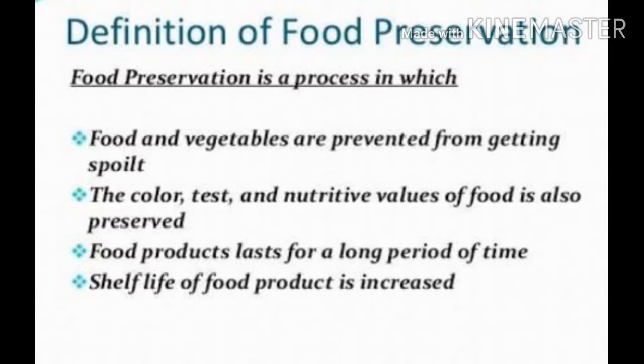Let us discuss what is meant by food preservation. Food preservation is a process in which food and vegetables are prevented from getting spoiled. After a few days, if we keep some vegetables and food for many days, they will spoil. Through preservation, the color, taste, and nutritional values of food are also preserved, and food products last for a longer period of time — the shelf life of the food product is increased.